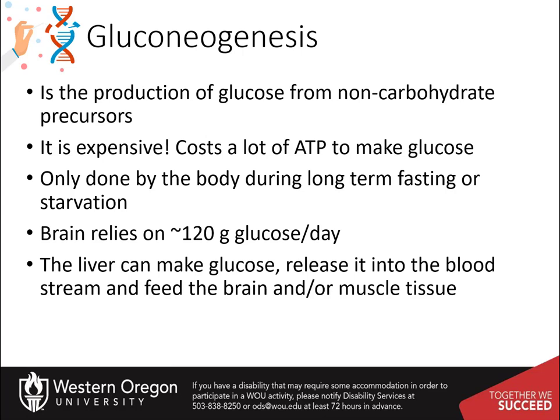During long-term fasting or starvation, glycogen stores within the liver are depleted, causing the liver to no longer be able to homeostatically regulate blood glucose levels from this source. This is when gluconeogenesis kicks into gear. The liver will expend large quantities of energy from fat to produce glucose and release it into the bloodstream. In this way, the brain and skeletal muscles can be supplied with quick energy.